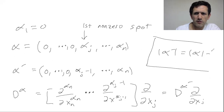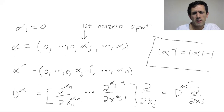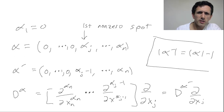It's fairly clear that the order of α' is going to be the same as α but minus one, since everything is the same except in the j-th spot you subtract one. And because αⱼ is a positive integer, αⱼ − 1 is a non-negative integer — it could be zero, that's okay.